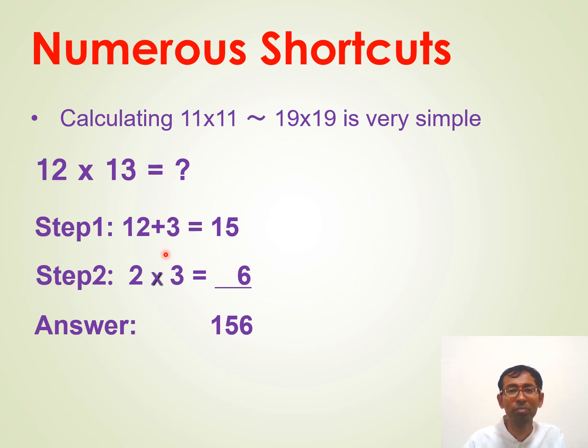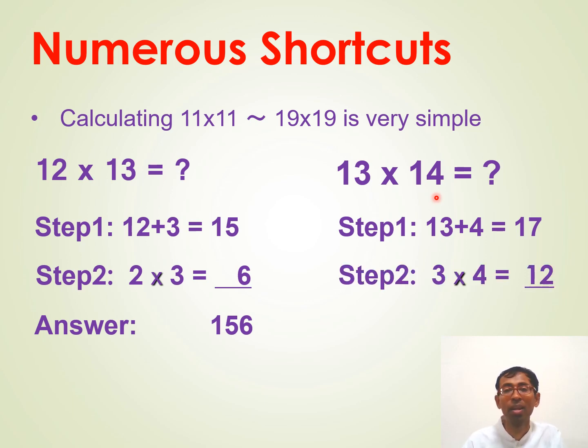13 times 14. The procedure is similar. Step 1. 13 on the left plus the second digit on the right. That is 4. 13 plus 4 is 17. Step 2. You simply multiply the second digits. 3 times 4 is a 12. Well, the 1 here is a carry and is eaten by 17 and that becomes 18. So the answer is 1, 8, 2.